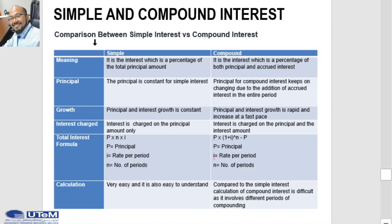From our discussion, comparing simple interest versus compound interest: in terms of meaning, simple interest is a percentage of the total principal amount only, while compound interest is a percentage of both principal and accrued interest — interest on top of interest. In terms of principal, for simple interest the principal remains constant, while for compound interest the principal keeps changing due to the addition of accrued interest each period.